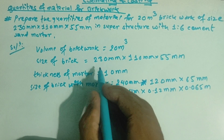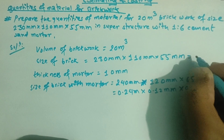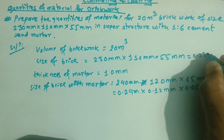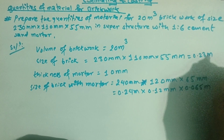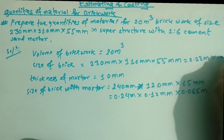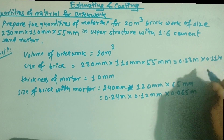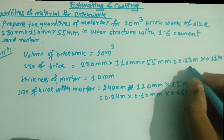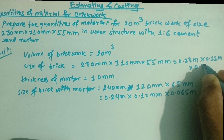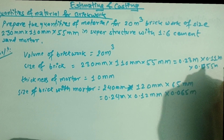So we have a brick of size: 230 mm (0.23 m), 110 mm (0.11 m), by 55 mm (0.055 m).